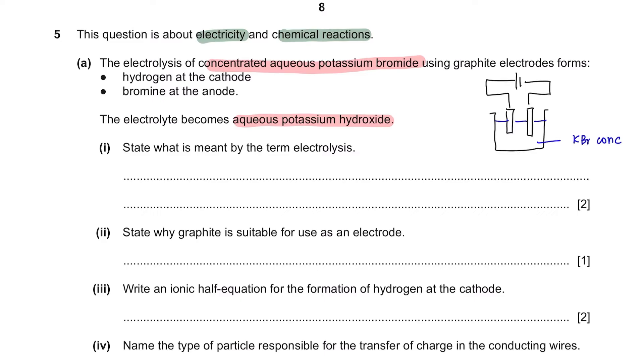In aqueous potassium bromide, you will find these four ions, which will be attracted to anode and cathode based on their charges. Since the electrolyte here is concentrated, at anode, bromide ion will be selectively discharged, and at cathode, hydrogen ion will be selectively discharged. This leaves hydroxide and potassium. Therefore, your electrolyte becomes potassium hydroxide.